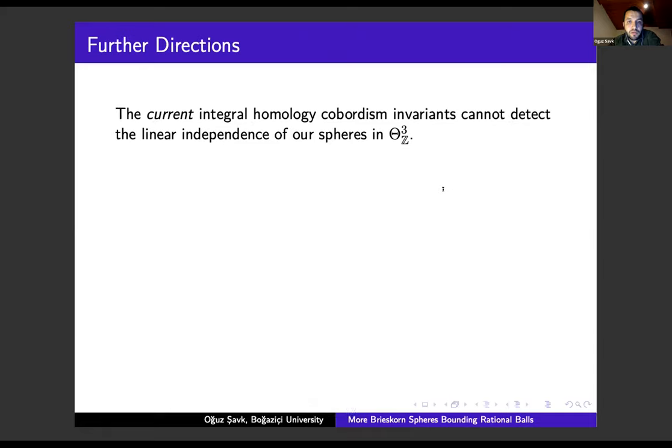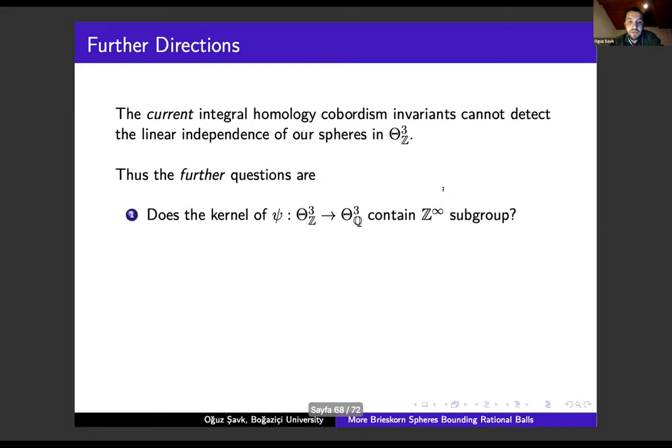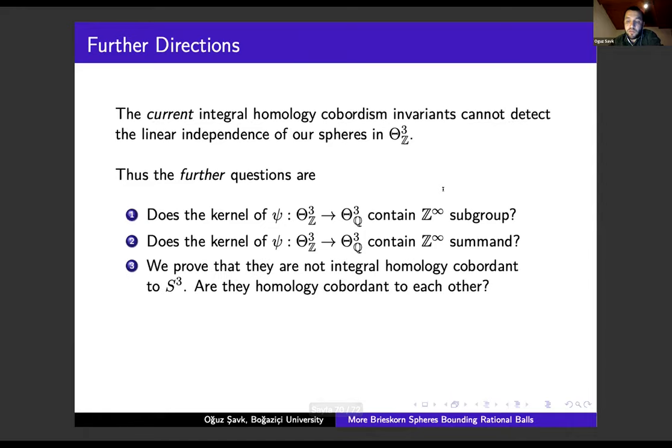This is the further direction of this work. All well-known integral homology cobordism invariants cannot detect the linear independence of our spheres, so the first further question is: does the kernel of ψ contain a Z^∞ subgroup? Similarly, we ask: does it contain Z_∞? On the other hand, we just proved that they are not integral homology cobordant to the three-dimensional sphere—they may be cobordant to each other, so this is the third question.